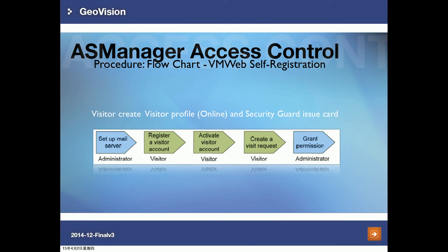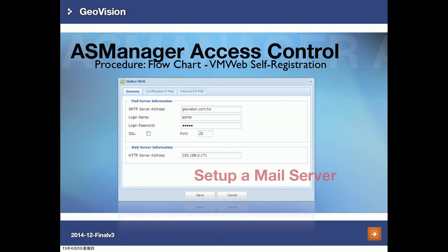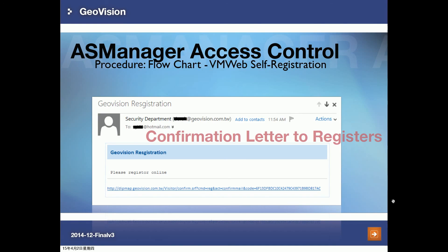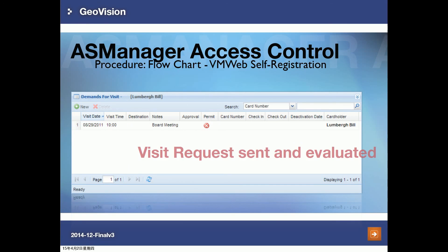For visitor self-registration, the VM administrator first sets up the mail server, then sends an email to the visitor to register an account. Once the visitor activates their account and sends an access request, the admin can choose to grant permission or not. The security guard or admin will see the request in VMWeb and decide whether to issue a card and grant access.